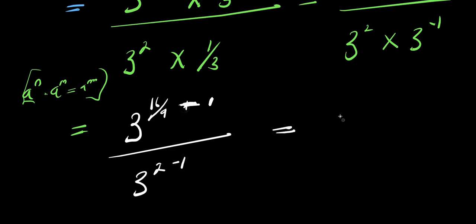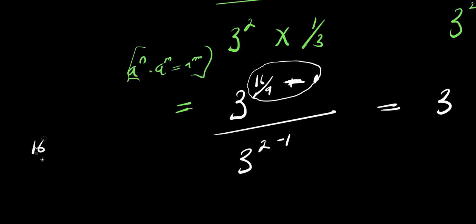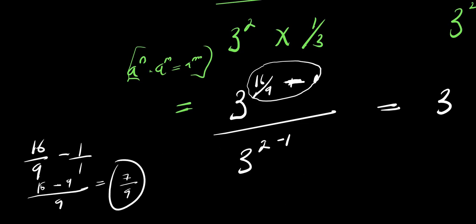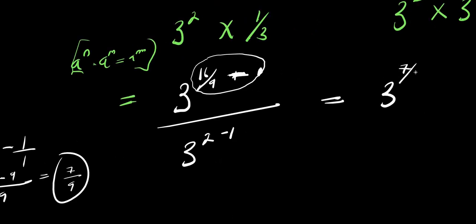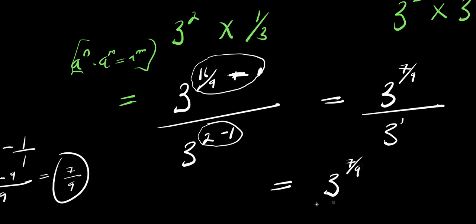This gives us 3 to the power of 16 over 9 minus 1. Let's compute 16 over 9 minus 1: that equals 7 over 9. So the numerator becomes 3 to the power of 7 over 9. The denominator is 3 to the power of 1, which is just 3. So from here we have 3 to the power of 7 over 9, divided by 3.